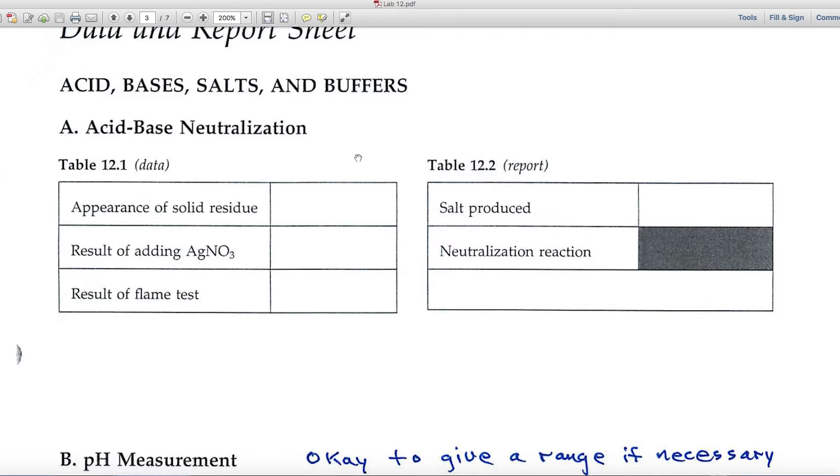Typically, when you make observations in chemistry, you look for colors. You look for the formations of solids or precipitates. So those are the descriptive kinds of words that the grader will look for.